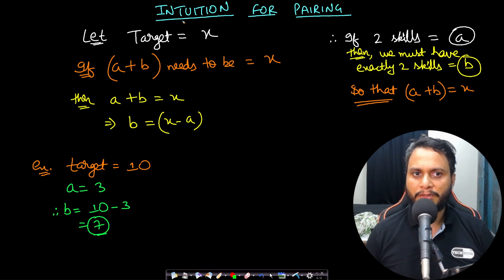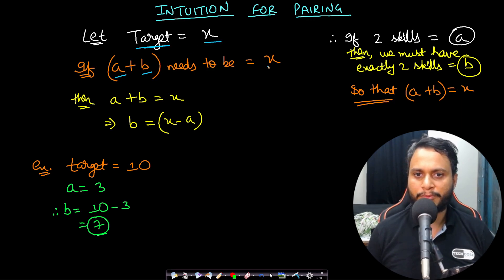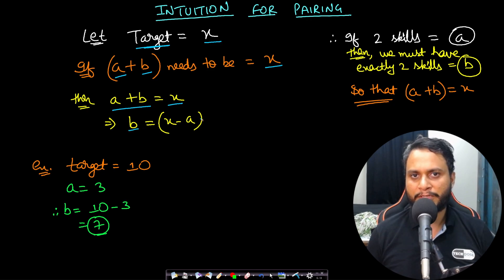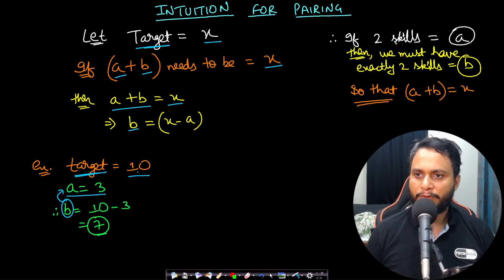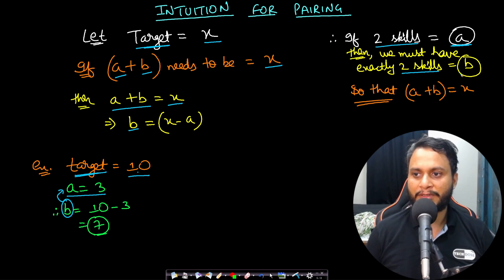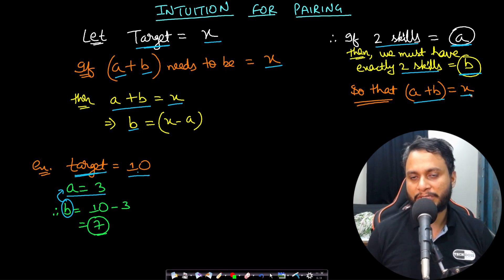Before the better approach, here is the pairing intuition. If the target sum is x and we need two items a and b such that a + b = x, then b = x - a. For example, target = 10, a = 3, so b must be 7. Therefore if there are some skills with value a, there must be exactly as many skills with value b = target - a to achieve the equal skill sum target.